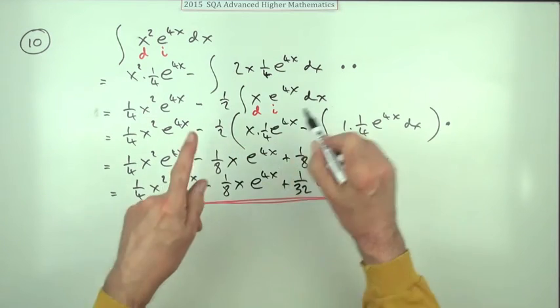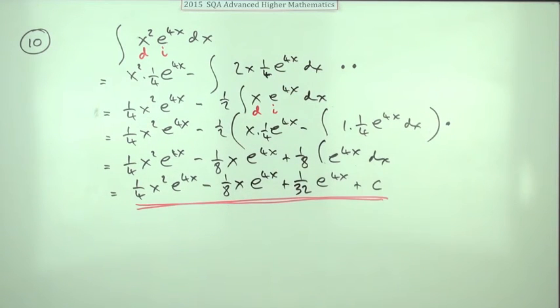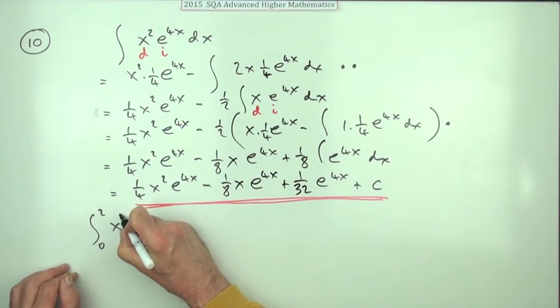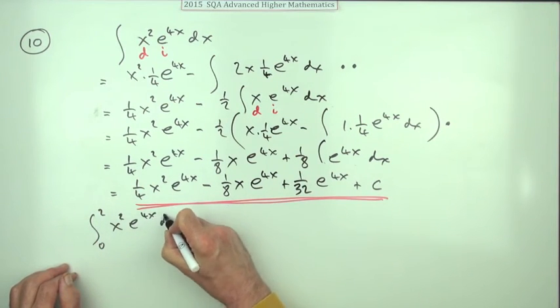Of course if I'd been using the evaluation brackets there would be no mention of c. But now I can do the evaluation. So what is the integral from 0 to 2 of x squared e to the 4x dx?